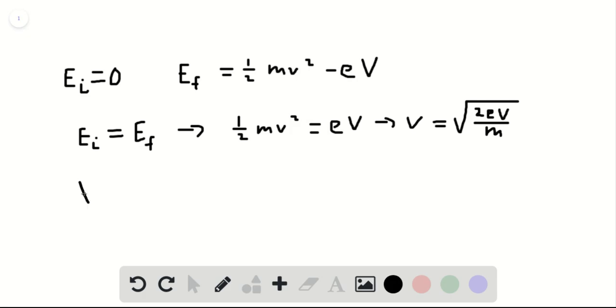Since lambda is equal to Planck's constant h divided by mass times velocity, we can plug in our velocity value and find that it's equal to h divided by m times the square root of 2eV/m. Since the square root of m is in the denominator, the square root of m can be factored out.